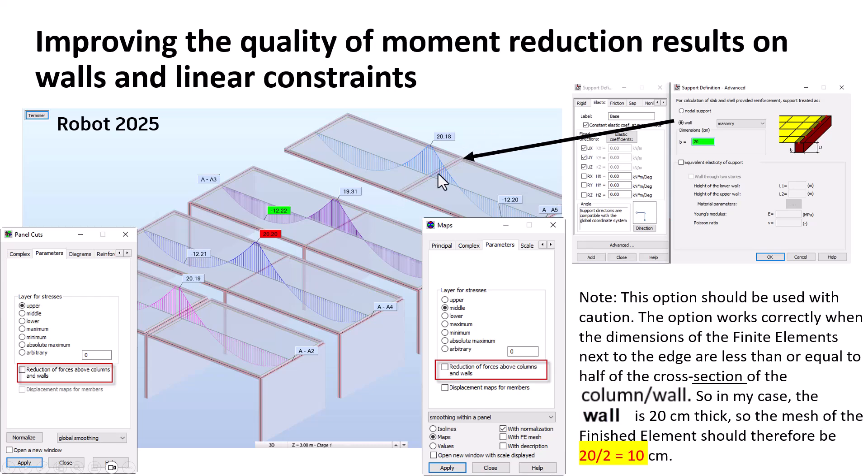So here on wall, you have a linear support. You can define in advance the size of the wall. Of course, when you already have a real wall in shell, it's already defined.